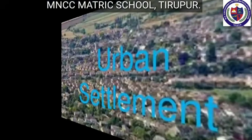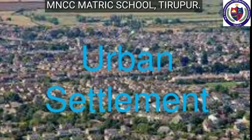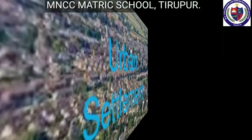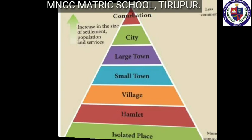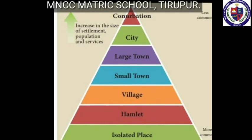Next: Urban settlements. People in urban settlements are primarily engaged in non-agricultural activities such as secondary, tertiary, and quaternary activities. Classification of urban settlements: urban centers are classed as towns, cities, metropolitan cities, mega cities, and conurbations.